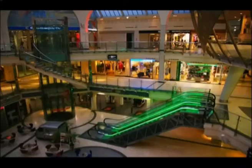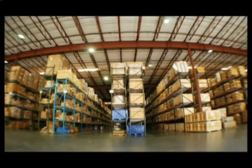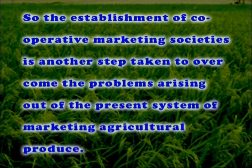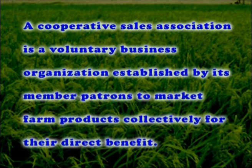The efforts of the government to improve the marketing system of agricultural commodities have been only partially successful, and the progress of regulated markets is not uniform in all areas. The establishment of cooperative marketing societies is another step taken to overcome the problems arising out of the present system. A cooperative sales association is a voluntary business organization established by its members to market farm products collectively for their direct benefit, governed by democratic principles, with savings apportioned among members on the basis of their patronage.